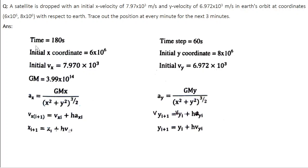The total time interval is 3 minutes, which in SI unit is 180 seconds, and time step is 1 minute or 60 seconds. Initial x coordinate is 6×10⁶ meters. Initial y coordinate is 8×10⁶ meters. Initial Vx is 7.97×10³ m/s. Initial Vy is 6.972×10³ m/s. And we know the equations for Ax, Vx, x, and similarly Ay, Vy, y.